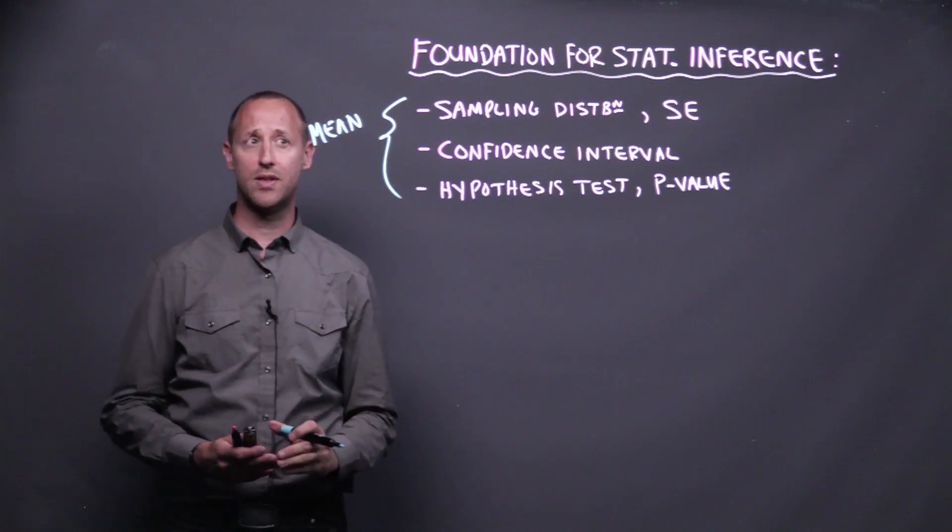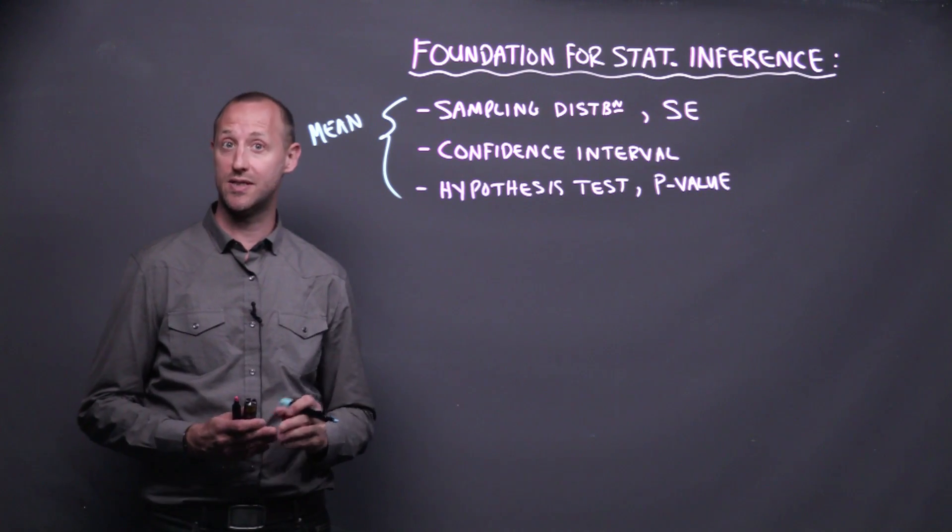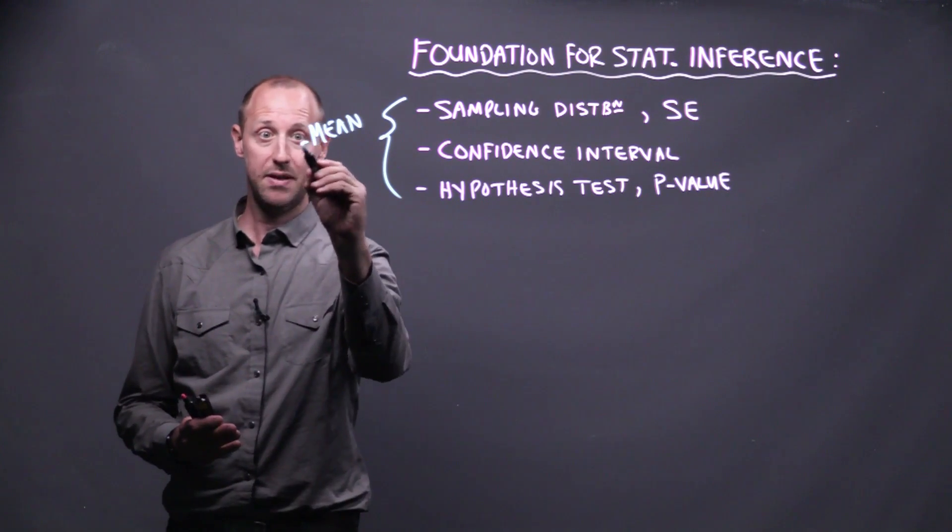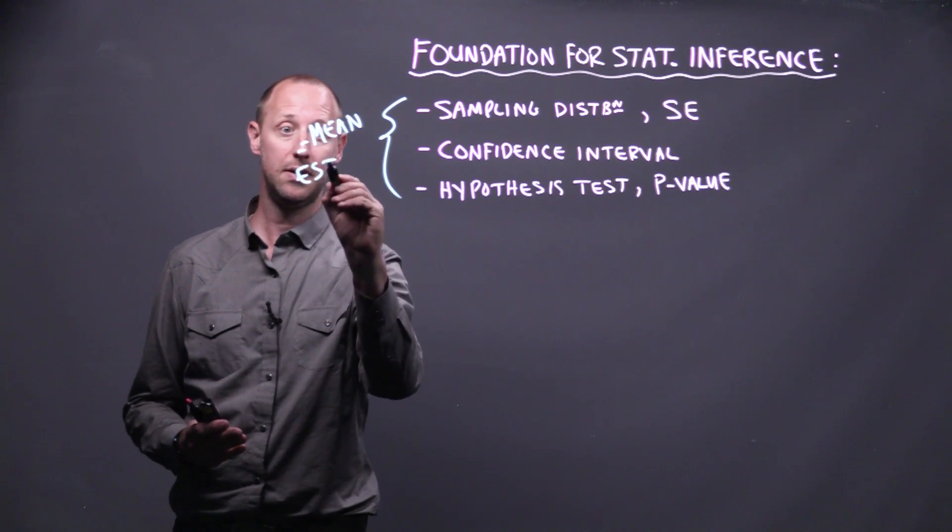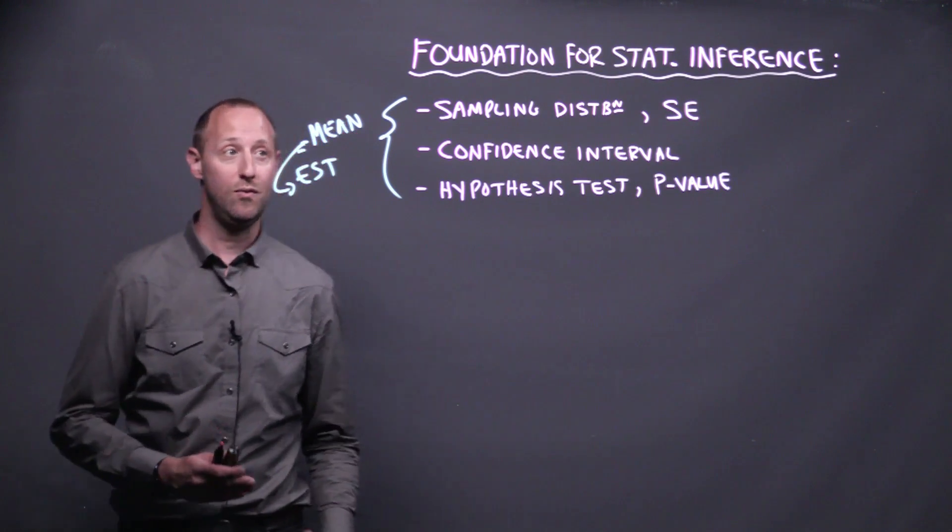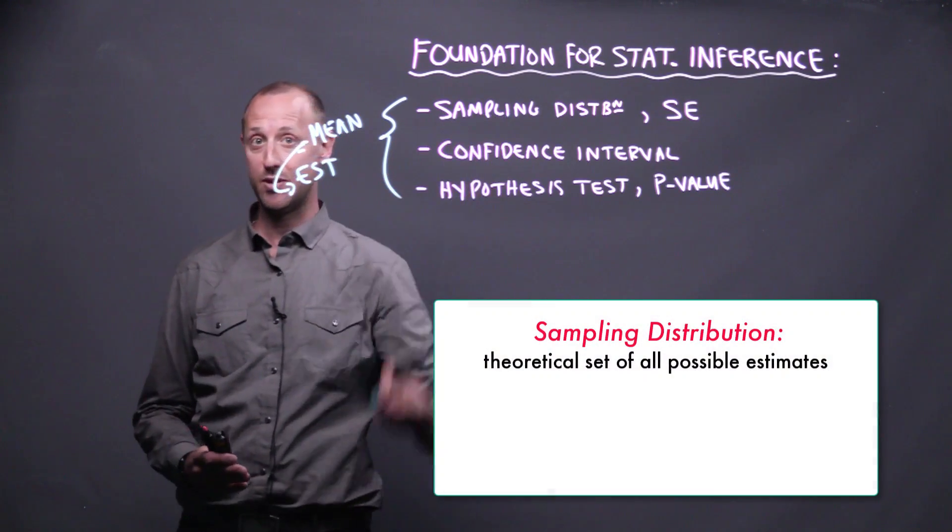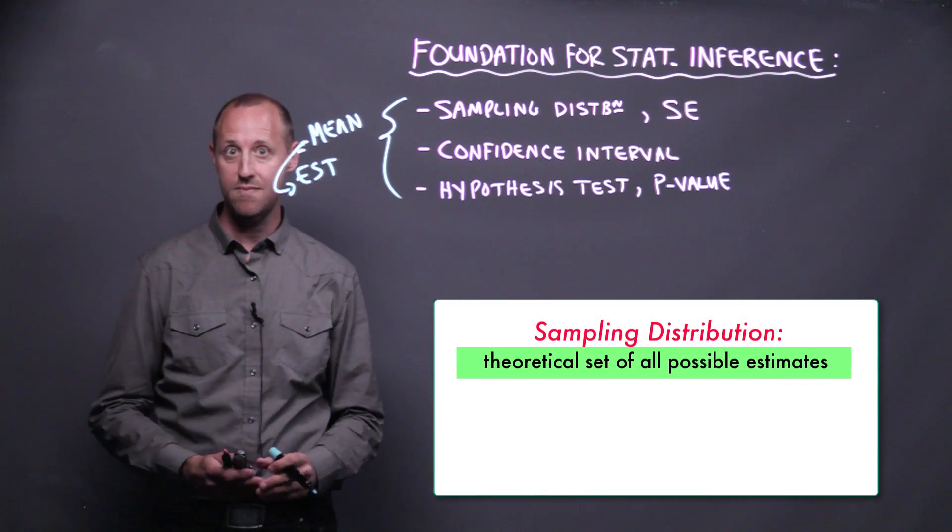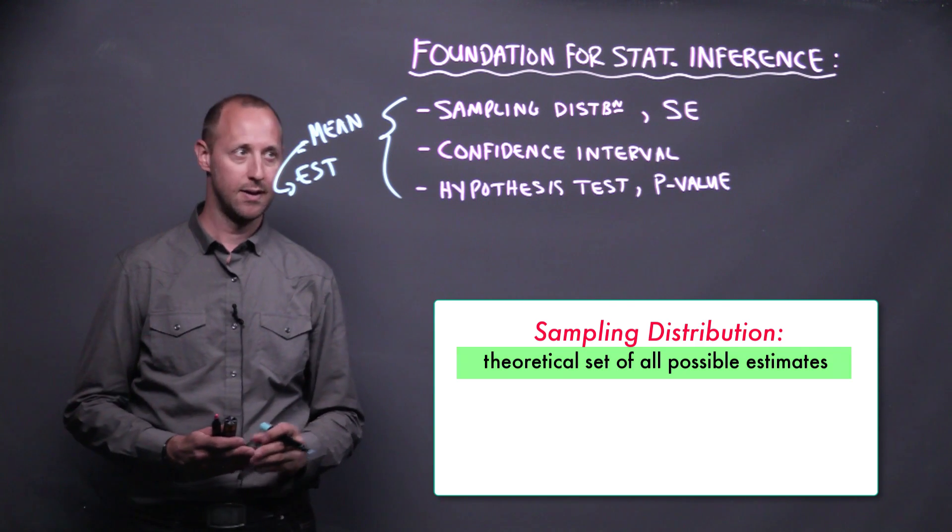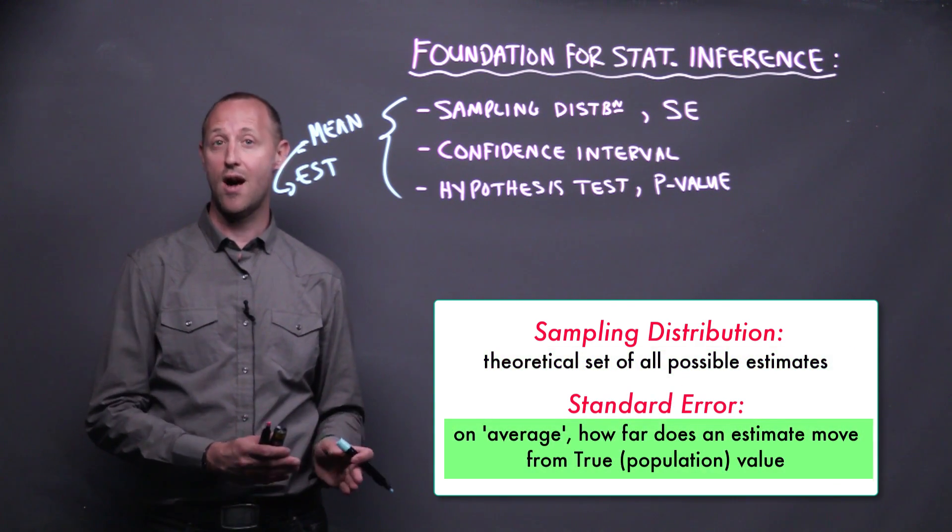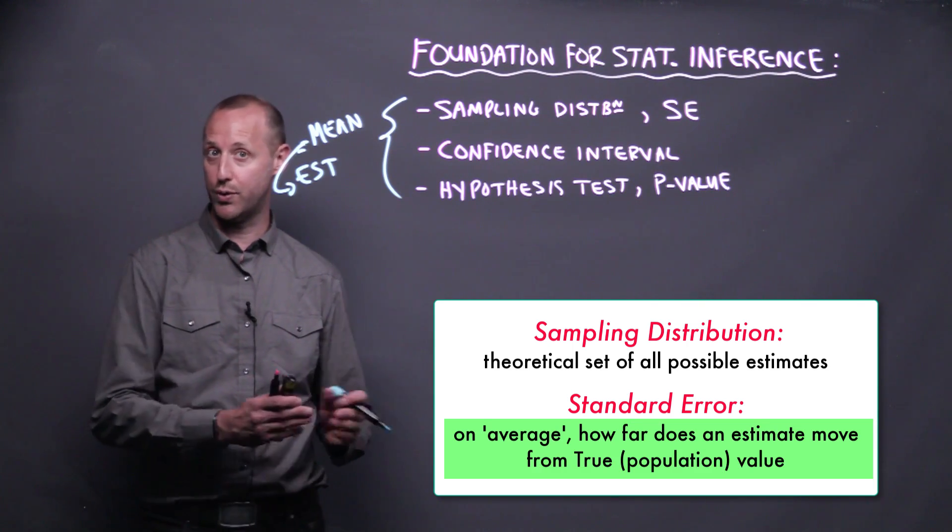So we talked a bit about the sampling distribution as well as the standard error. So remember we think of our estimate, in this case the mean, as being one of many possible estimates we could get and the sampling distribution describes the theoretical set of all possible estimates. The standard error gave us an idea of, on average, how far will an estimate move from the true population value.